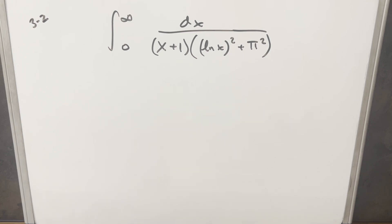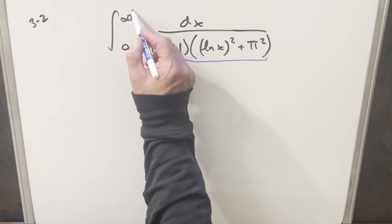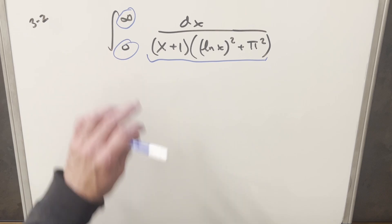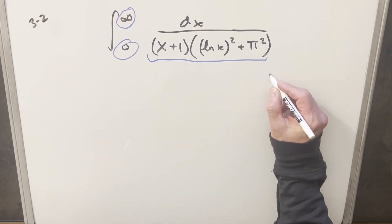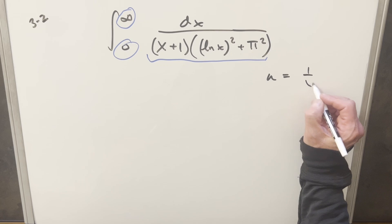Okay, to get started with this, I don't really know how to deal with all this the way we have it right here, but maybe what I can use is the bounds. When we have the bounds going from 0 to infinity like this, sometimes what we can do here is a u-substitution. So what I want to do is, for my u-substitution, let's just set u equal to 1 over x.